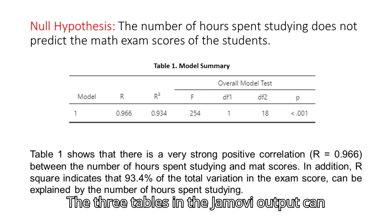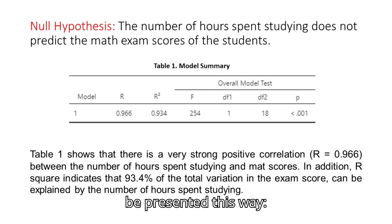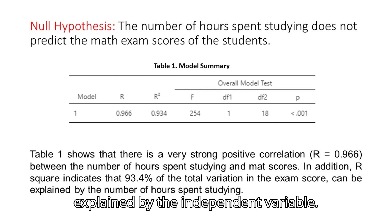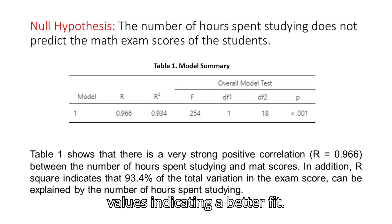The three tables in the Jamovi output can be presented this way. The R in table 1 represents the correlation coefficient of the two variables when paired. While the R-square represents the proportion of variance in the dependent variable explained by the independent variable. It ranges from 0 to 1, with higher values indicating a better fit. However, a high R-square doesn't necessarily mean a perfect model. It can be converted to percent in the interpretation of results.